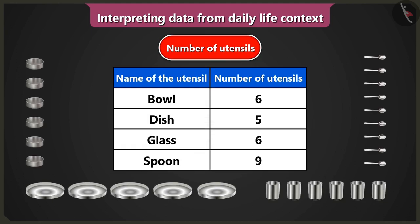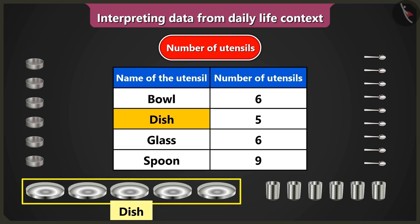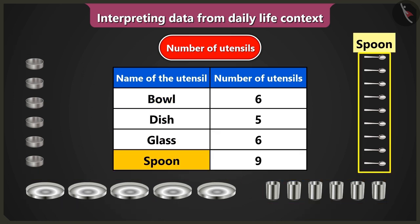The data about utensils we have is given in this table. The data about names of the utensils is given in the first column and the data about the number of utensils is given in the second column of the table. Names of utensils: bowl, dish, glass and spoon are written here.